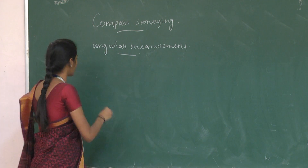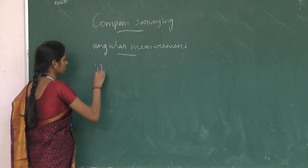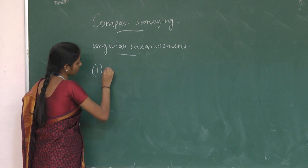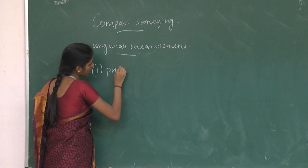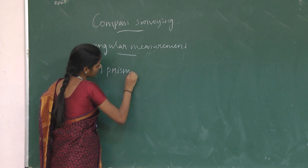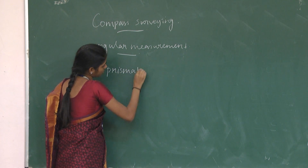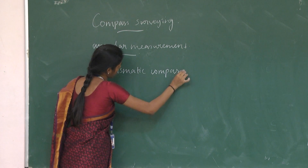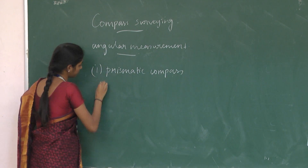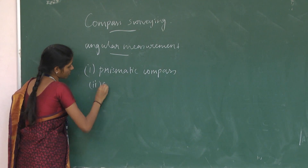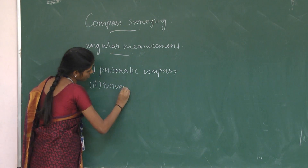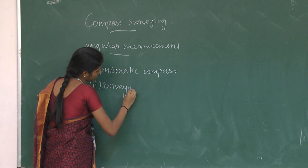There are two types of compass used in compass surveying: the prismatic compass and the surveyor's compass.